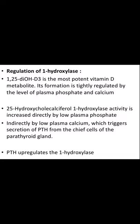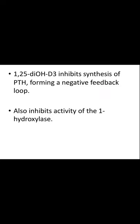1,25-dihydroxycholecalciferol is the most potent vitamin D metabolite. Its formation is tightly regulated by the level of plasma phosphate and calcium. 25-hydroxycholecalciferol 1-hydroxylase activity is increased directly by low plasma phosphate, and indirectly by low plasma calcium, which triggers secretion of PTH from the chief cells of the parathyroid gland. Parathyroid hormone upregulates the 1-hydroxylase. 1,25-dihydroxycholecalciferol inhibits the synthesis of PTH, forming a negative feedback loop, and also inhibits the activity of 1-hydroxylase.